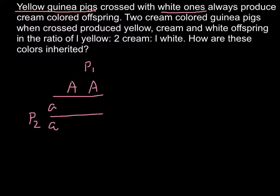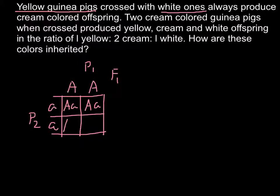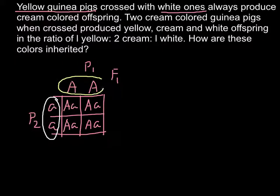Now we build a Punnett square. This is going to be the F1 generation when we cross the two parents. All of the offspring are going to be heterozygous for the color. But because here we have incomplete dominance, the color is going to be different from the parent color — so all the F1 generation would be cream colored.